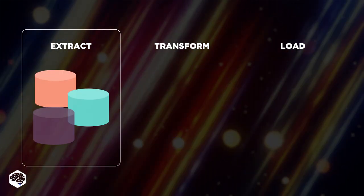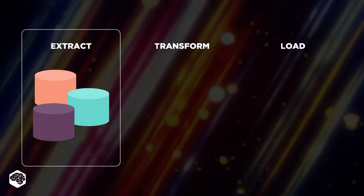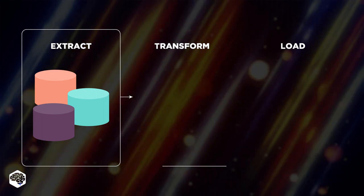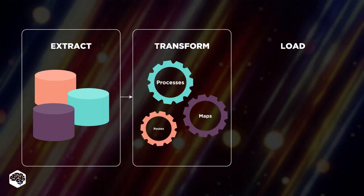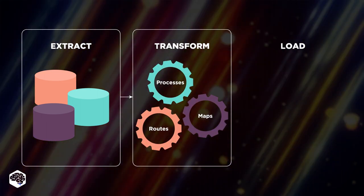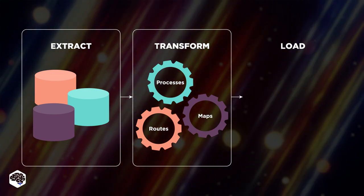Extract is the first stage, which involves the extraction of data from source systems. The Transform stage converts unstructured data from different formats to a single predefined data model.